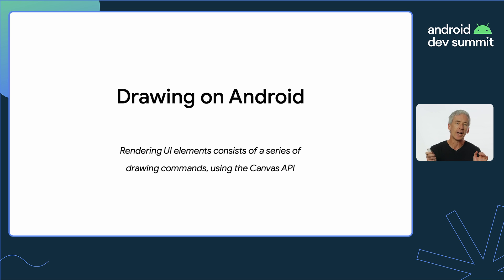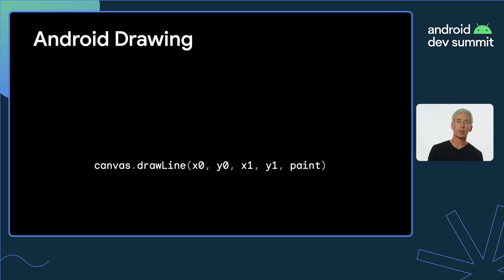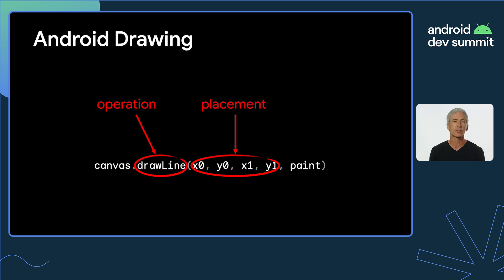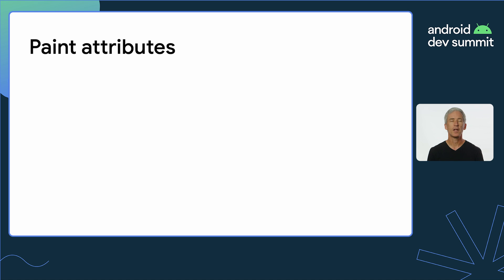A typical operation looks something like a draw-line command, and that has really three portions to it. One is the operation that's happening — in this case, we're drawing a line. The other is the placement of that thing: where are we going to start and end, what is the size of this object? And then finally, what are the attributes — how are we going to draw this line, what is it actually going to look like? The attributes are collected into the paint object, which stores the information about how each object is drawn.